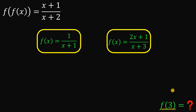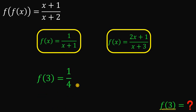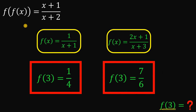Therefore we found two functions satisfying the condition, giving two possible values for f of three. For f of x equals one over x plus one, f of three equals one over four. For f of x equals two x plus one over x plus three, f of three equals seven over six. Therefore, given f of f of x equals x plus one over x plus two, the value of f of three is one over four or seven over six.